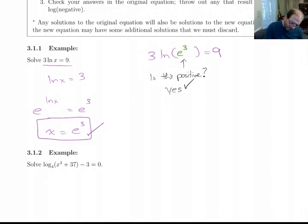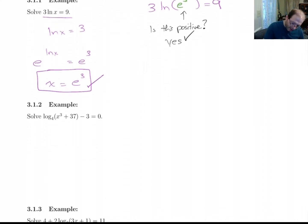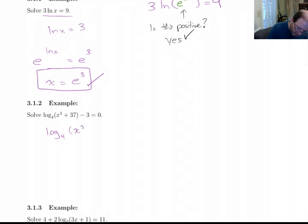Let's do this one. Solve log base 4 of x cubed plus 37 minus 3 equals 0. This looks ugly but it's not really that bad. We'll move the 3 over to the other side. Log base 4 of x cubed plus 37 equals 3. And now we'll write a new equation by doing 4 raised to this equals 4 raised to that.